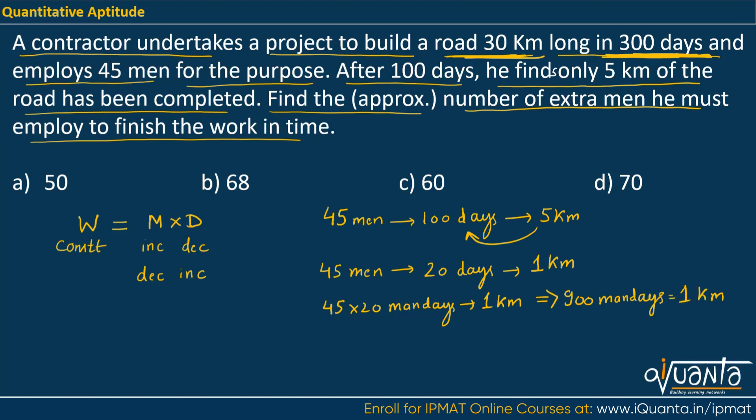Now since the remaining work is 25 kilometer, 5 kilometer has been built 25 kilometers remain. So total work remaining will be 25 into 900 man days. This will be the total work because for 1 kilometer work is equal to 900 man days. For 25 kilometer work will be equal to 25 into 900 man days. So this will be equal to 22500 man days. This is the work that has to be completed.